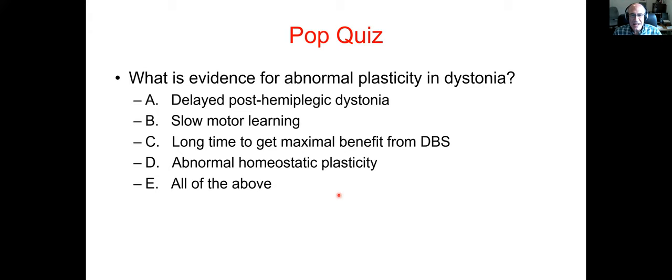The evidence for abnormal plasticity in dystonia includes all of the above: delayed post-hemiplegic dystonia, slow motor learning, a long time to get maximal benefit from DBS — which can be six months or even a year — and abnormal homeostatic plasticity, which I was just talking about. These are all different phenomena that can be seen in patients that have dystonia, and they are all examples of abnormal plasticity.